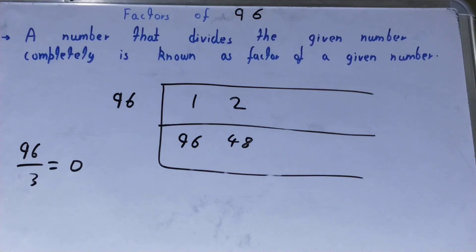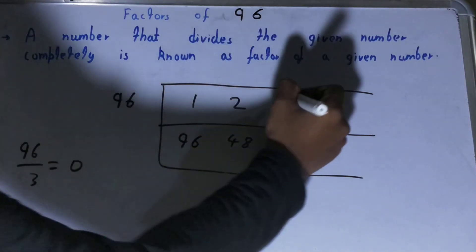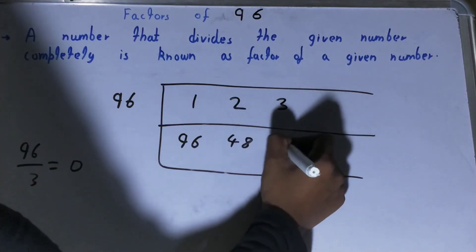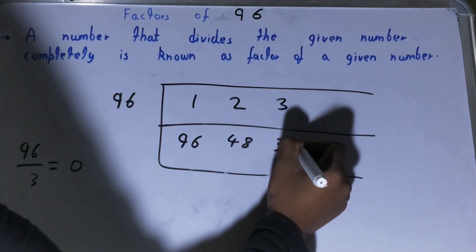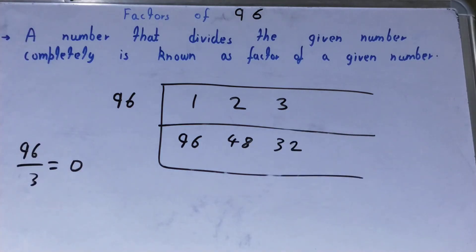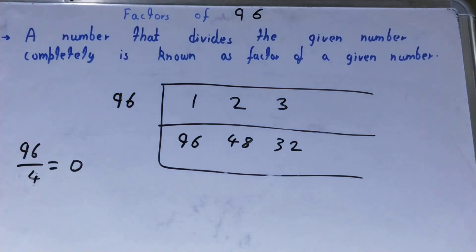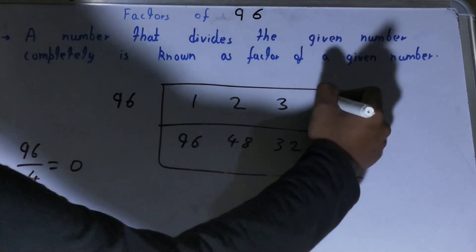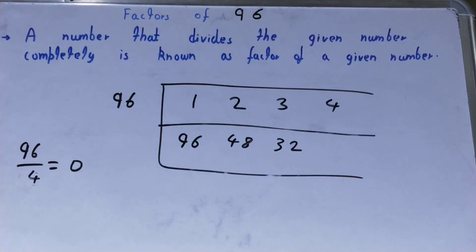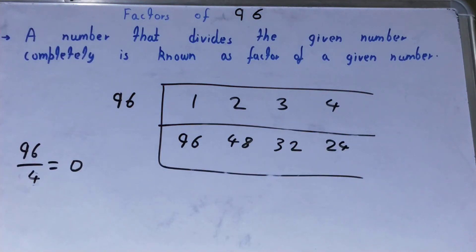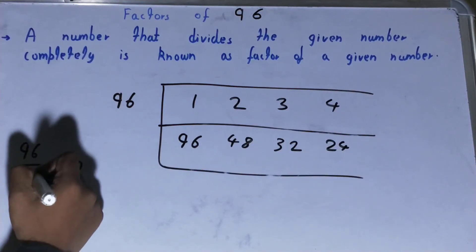So 3 is a factor, and since 3 times 32 equals 96, 32 is also a factor. After 3 comes 4. If you divide 96 by 4, you get the remainder as zero, so 4 is a factor. And since 4 times 24 equals 96, 24 is also a factor.